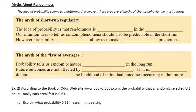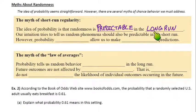Page 2 here. Myths about randomness. People often confuse these. The idea of probability seems straightforward. However, there are several myths of chance behavior we must address. The first one is the myth of short-run regularity. The idea of probability is that randomness is predictable in the long run, not the short run. That's the point. Our intuition tries to tell us random phenomena should also be predictable in the short run. However, probability does not allow us short-run predictions. So, don't be fooled by that.